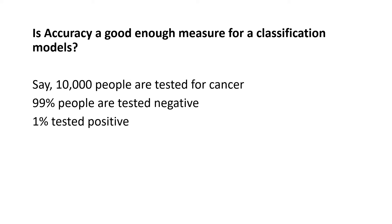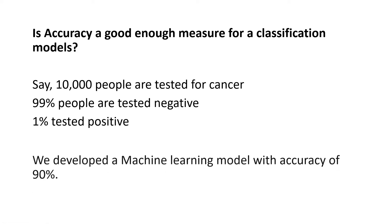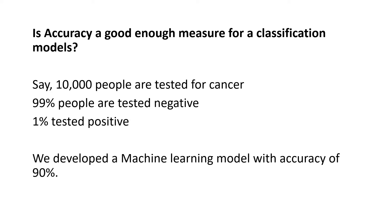Say we have 10,000 people and we are testing them for cancer — whether they have cancer or not. 99 people tested negative and only one person tested positive. Now we developed a machine learning model with an accuracy of 90%. 90% sounds really high, doesn't it? But just have a look at this data.